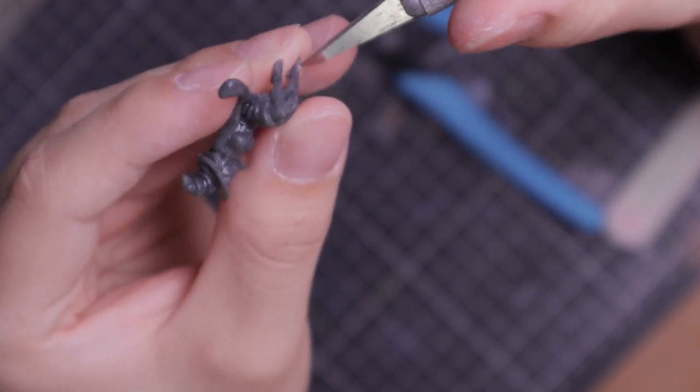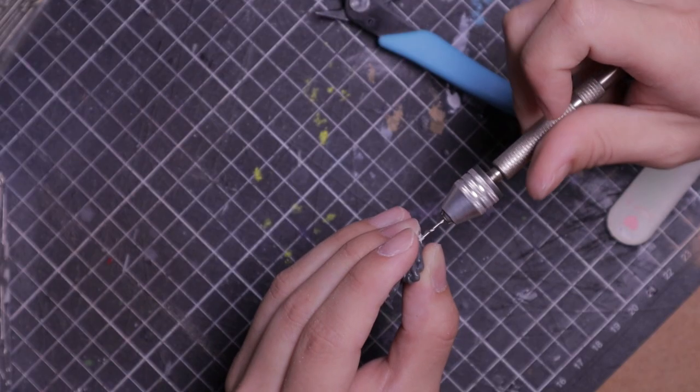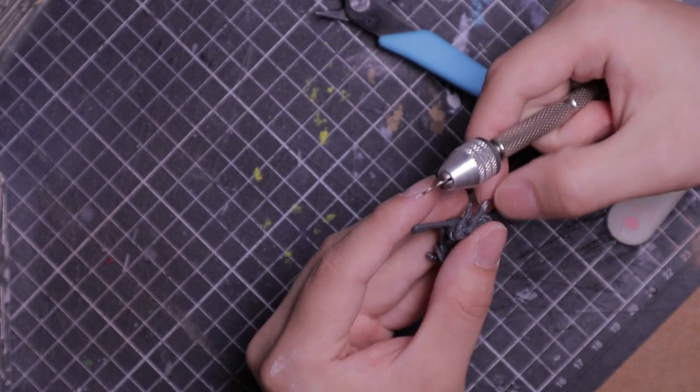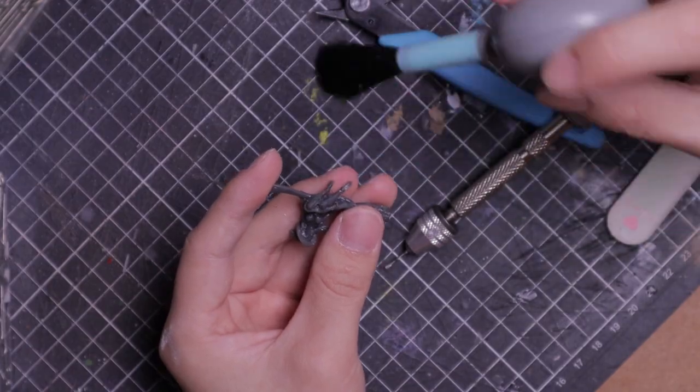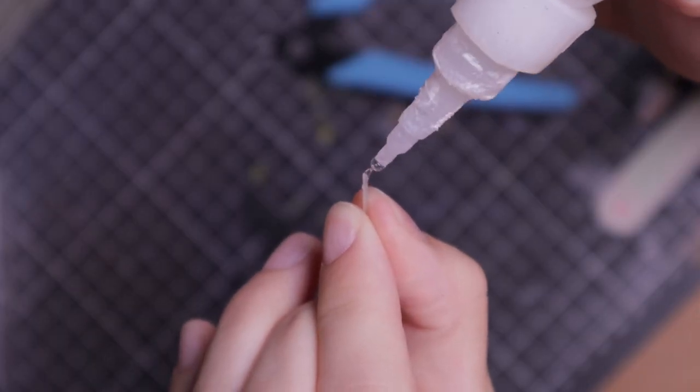To attach the pin, I make a pilot hole with a hobby knife, then using my smallest drill bit with a pin vise, I slowly drill the hole. Do not apply heavy pressure because that will crack the resin. And a little dab of super glue to secure the pin.